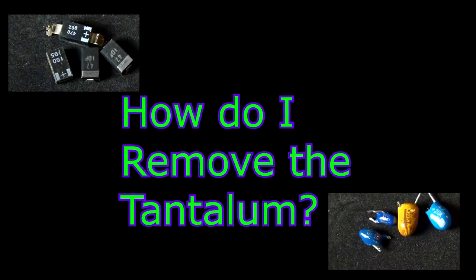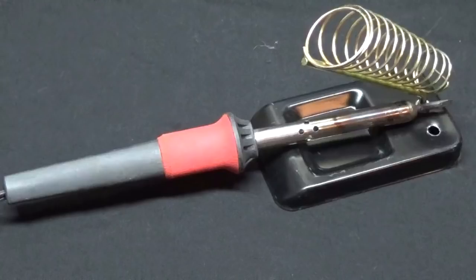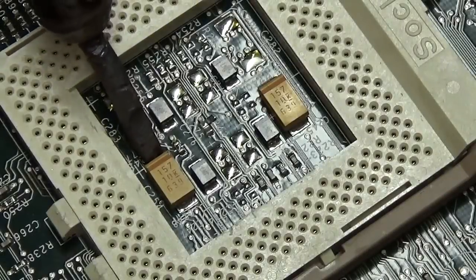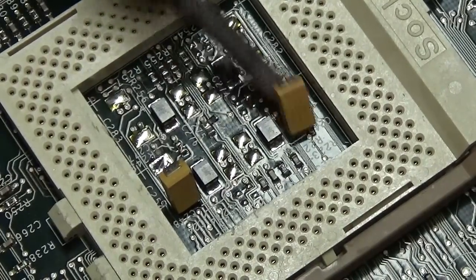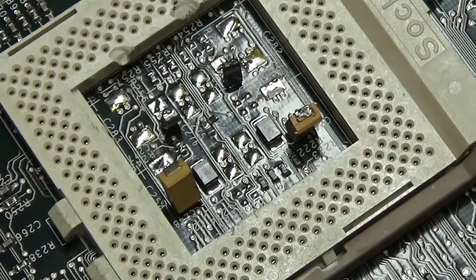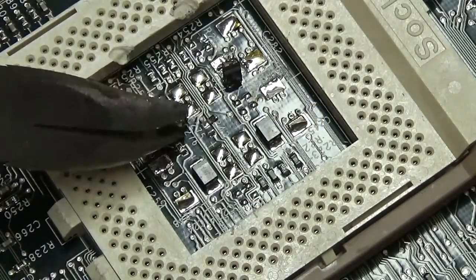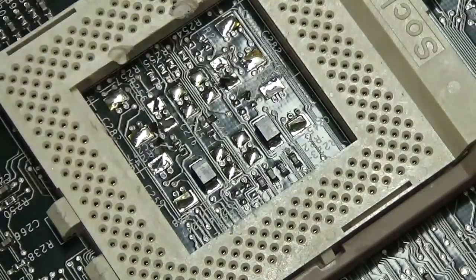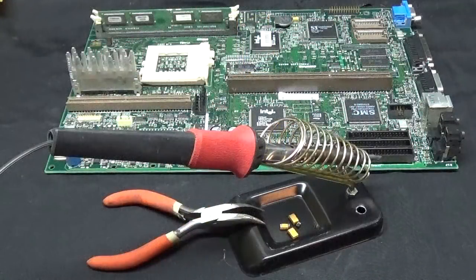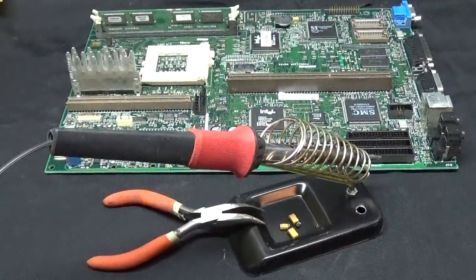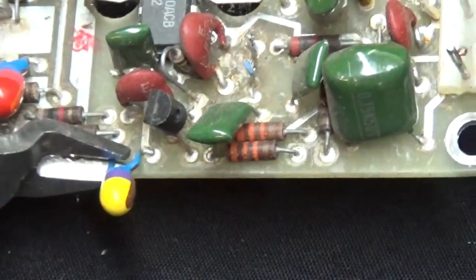How do I remove the Tantalum? For the square capacitors, I'm going to desolder and then remove with a pair of pliers. And for the dipped-looking capacitors, I'm going to use a pair of wire cutters.